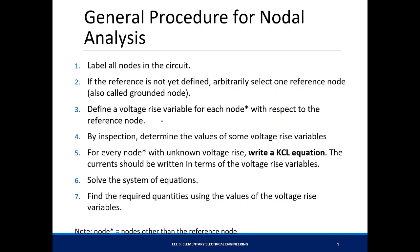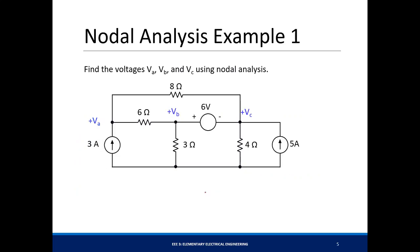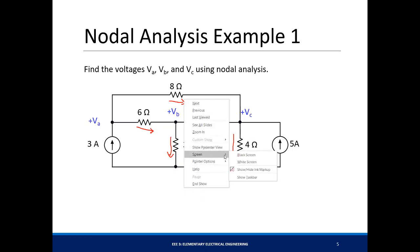Define a voltage rise variable for each node — these are nodes other than the reference node. With respect to the reference node, determine the values of some voltages that will be evident. For every node with an unknown voltage rise, you create a KCL equation, and the current should be written in terms of the voltage rise variables. Then you solve the system of equations and find the required quantities. We have this circuit here — instead of doing KVL and KCL which would need four equations, we'll do nodal analysis.